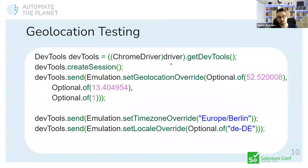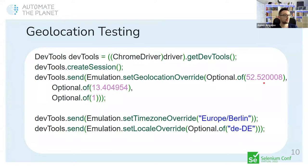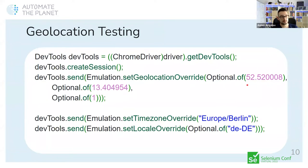For setting the geolocation you have three options — the first two are latitude and longitude, which are the most important. In Java the SDK is written so that some parameters can be empty, so you may use Optional.empty() or Optional with a value. In the same way, from the Emulation domain you can set the time zone and locale — you can find the full list on Wikipedia.